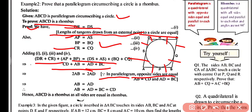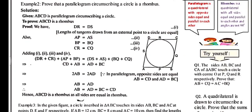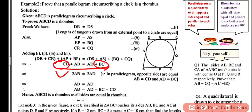Since ABCD is a parallelogram, opposite sides are equal: AB equals CD and AD equals BC. Substituting into AB plus CD equals AD plus BC: replacing CD with AB gives 2AB, and replacing BC with AD gives 2AD. So we have 2AB equals 2AD.